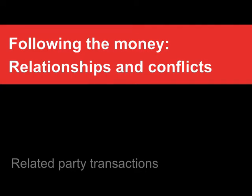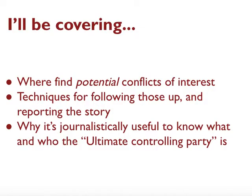One of the areas where company accounts can be most useful journalistically is in identifying relationships and potential conflicts of interest. In this video I'm going to cover where to find those potential conflicts of interest, some techniques for following those up, and how to report the sorts of stories you might get from that information, and why it's journalistically useful to know what and who the ultimate controlling party is — another piece of jargon you'll come across in company accounts.